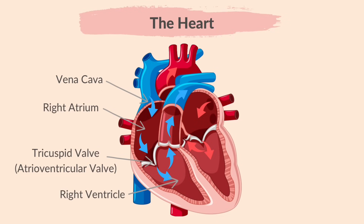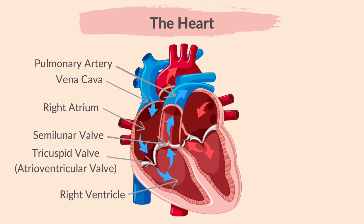This is the right ventricle, the next chamber of the heart. This is the semilunar valve — it prevents blood flowing backwards into the heart. The walls of the ventricle contract and the blood is pushed through the semilunar valve into the pulmonary artery. The pulmonary artery is a blood vessel that carries deoxygenated blood away from the heart to the lungs to be oxygenated.